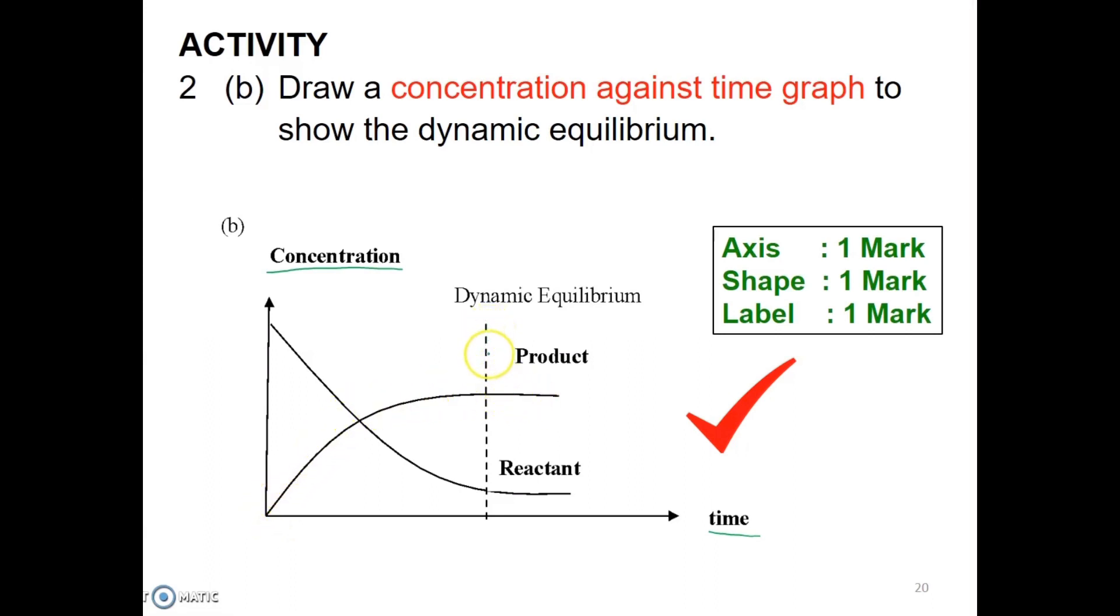At the time where the concentration of reactant and product are unchanged and become constant, this is the time where the reaction has achieved equilibrium. So this one, you should label compulsory. And this line is also compulsory for you to label and indicate the time that reaction has achieved equilibrium.